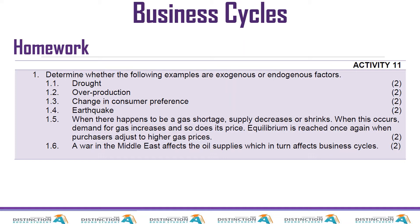The next one is changing consumer taste and preference. What do you think — is this endogenous or exogenous? I would say this one is an exogenous reason. The next one is earthquakes. An earthquake is more or less the same as a drought, so we give the same answer: exogenous.